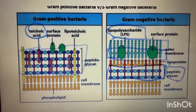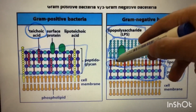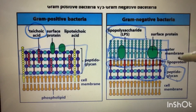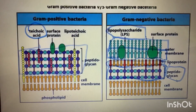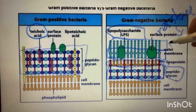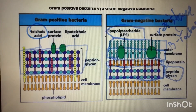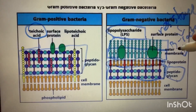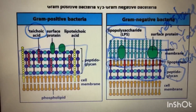Between the inner and outer membrane of gram-negative bacteria there is a periplasmic space. This periplasmic space contains beta-lactamases — enzymes that degrade beta-lactam antibiotics such as penicillin. The periplasmic space containing beta-lactamases also provides gram-negative bacteria resistance against antibiotics.